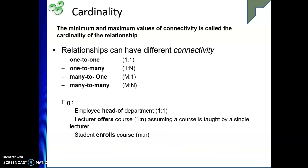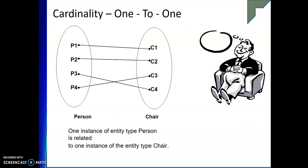To roll back on cardinality — we are talking about the maximum connectivity. One-to-one means one instance of entity E1 is connected to one instance of entity E2. One-to-many means one instance is connected to many instances of E2. Many-to-one means many instances of E1 are connected to one instance of E2. Many-to-many means many instances of E1 are connected to many instances of E2. For example, person and chair: one person can only sit in one chair, so it is one-to-one.